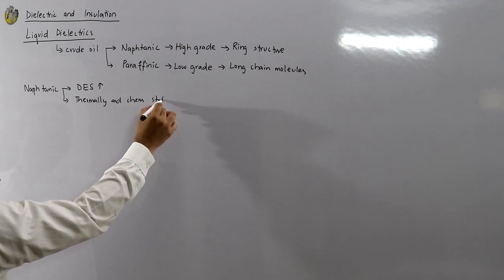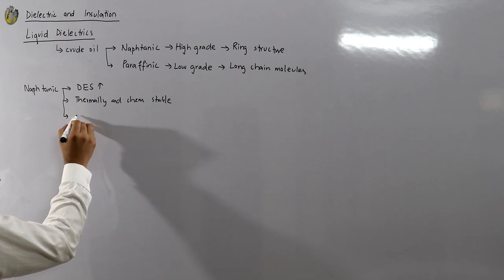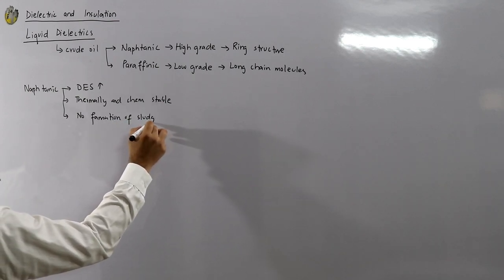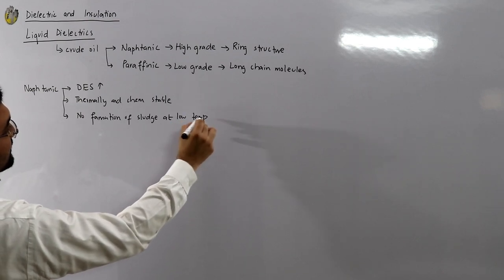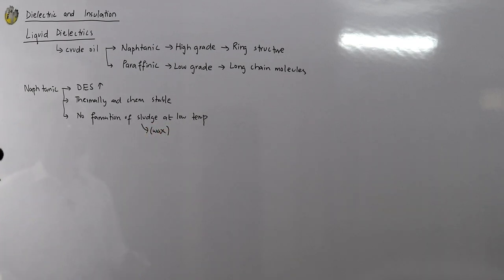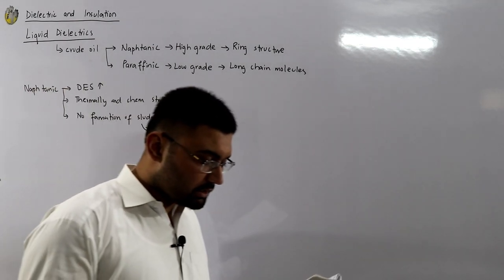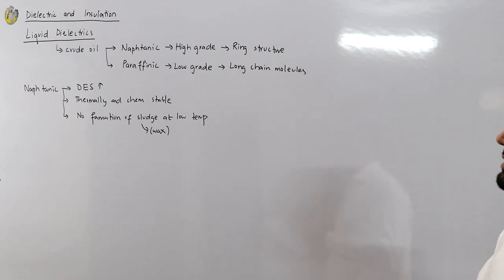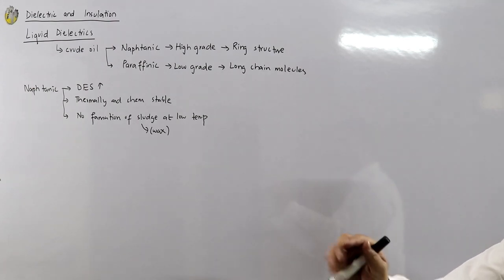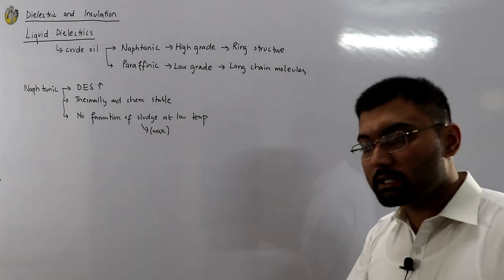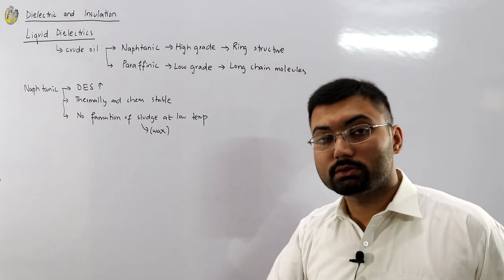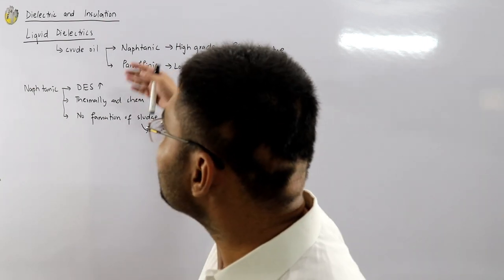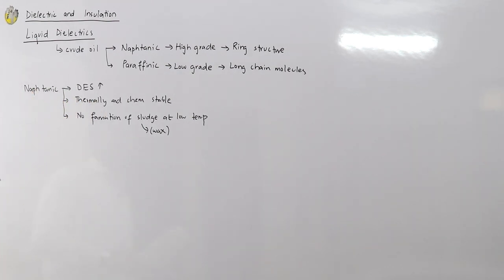Sludge is a waste material in the form of wax that settles down. In transformer oil, which circulates through radiator piping, sludge would block those pipes and affect the cooling system. Paraffinic is the low-grade oil by comparison. Both are crude oil derivatives, but naphthenic is preferred. Paraffinic is also used in some cases.